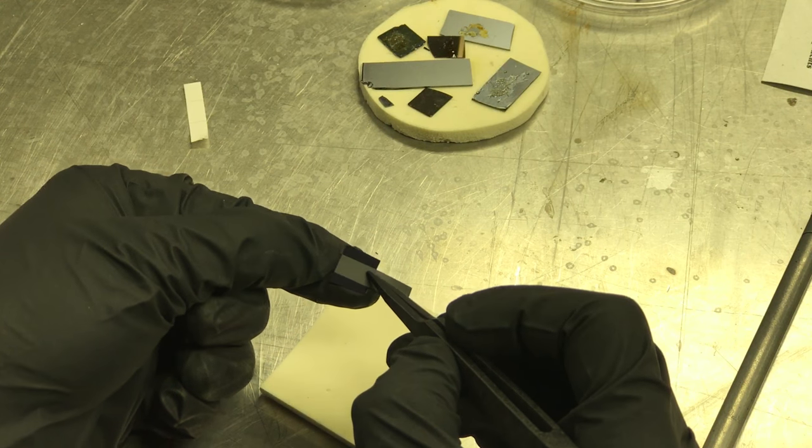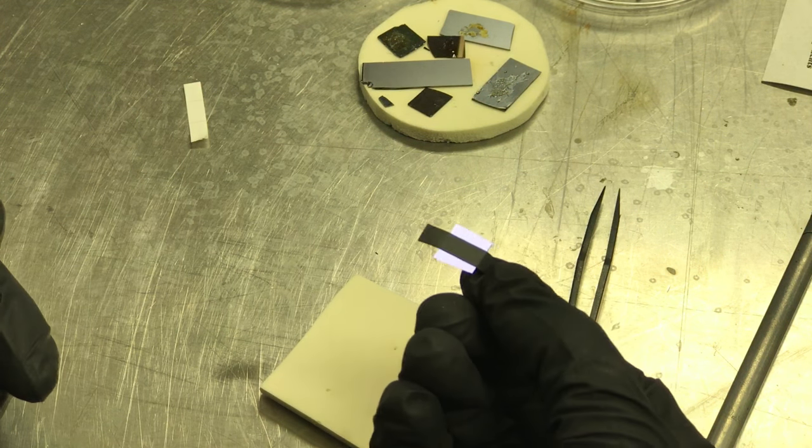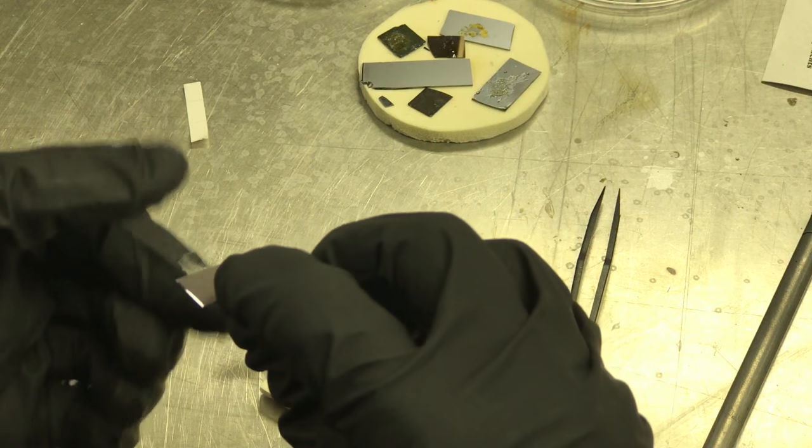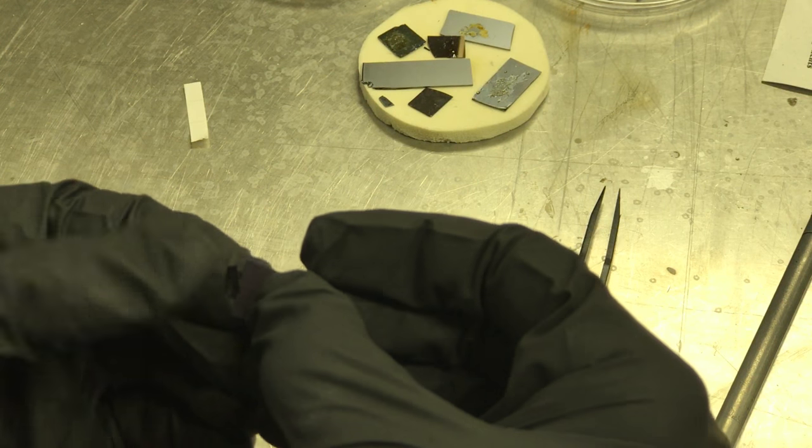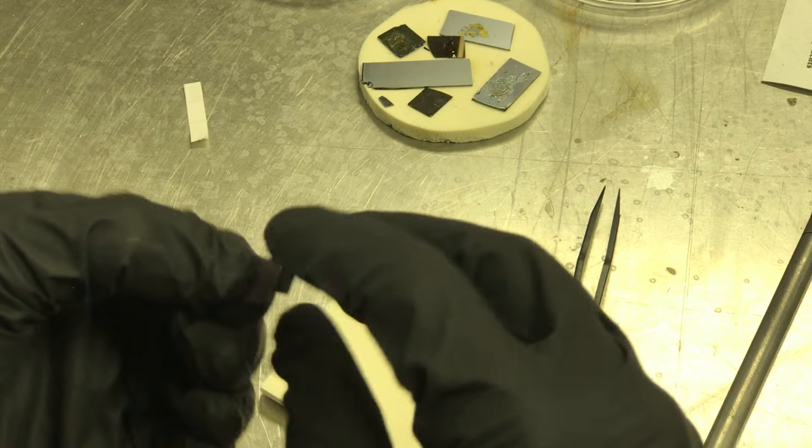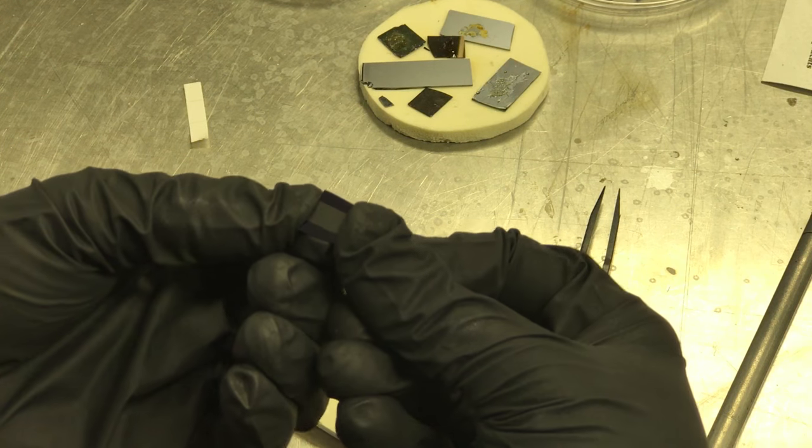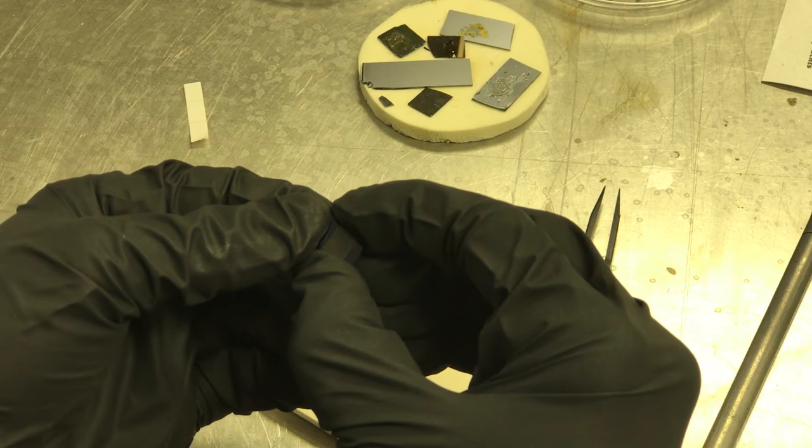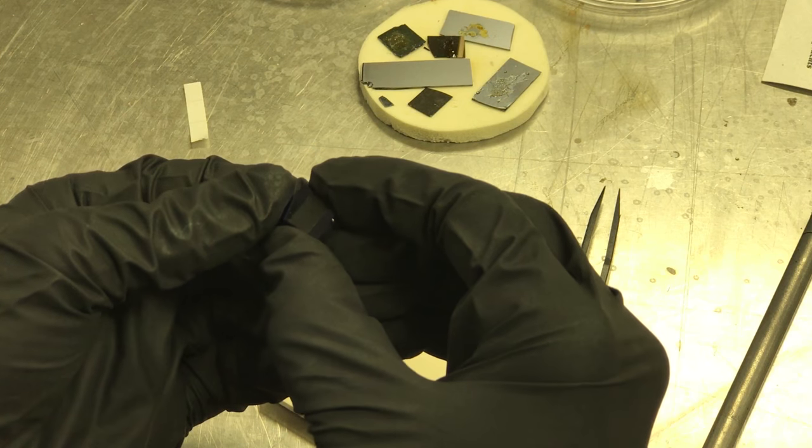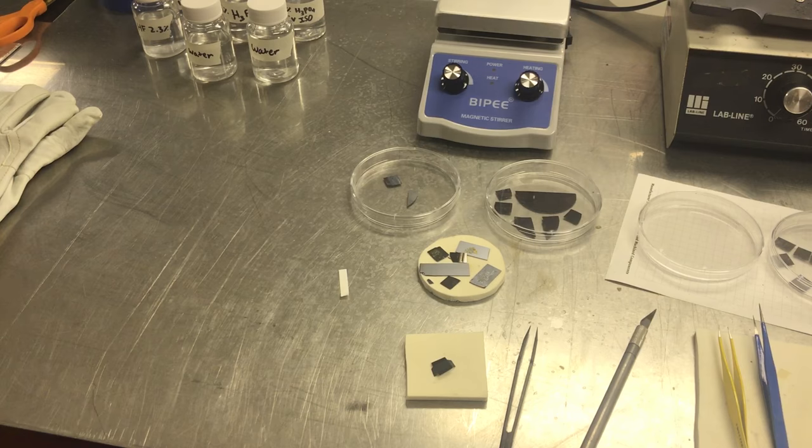Got to make sure that it's going to be adhered down. And there we go. We don't want to let any little molecules of HF get up underneath that because then our gate won't be properly etched. Alright, cool.